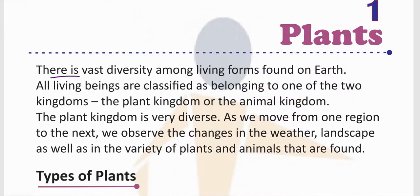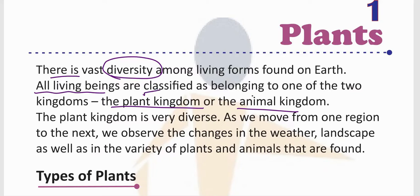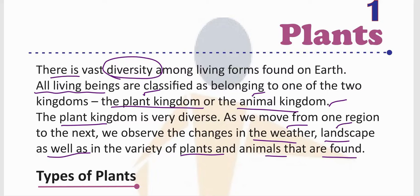Plants. There is a vast diversity among living forms found on earth. Diversity means many different types, different forms. All living beings are classified as belonging to one of the two kingdoms: the plant kingdom or the animal kingdom. Of course, human beings also belong to the animal kingdom. The plant kingdom is very diverse — very vast with many different ranges. As we move from one region to the next, we observe changes in weather, landscape, and in the variety of plants and animals found.